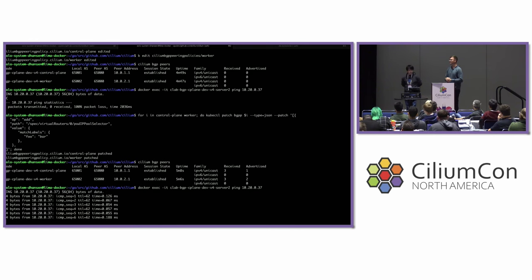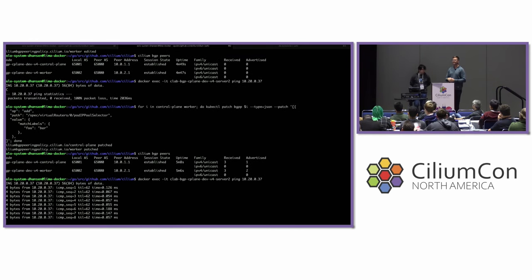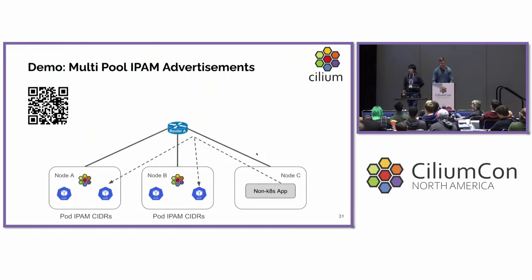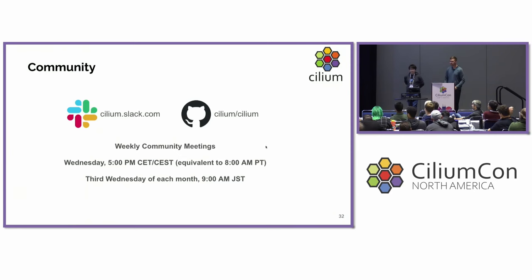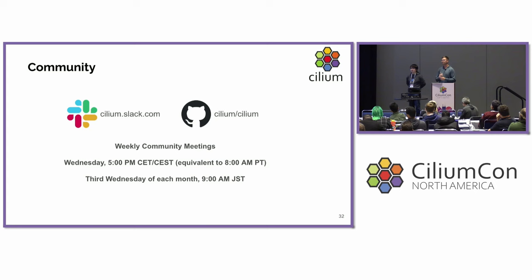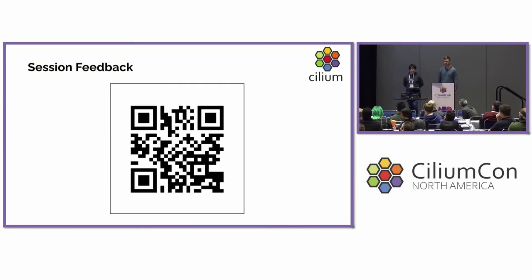Pretty simple demo. We didn't have a lot of time to get into all the different details of BGP control plane, so please take some time to check out the documentation. If you'd like to get involved, we'd love more involvement — not only in BGP control plane, but Cilium has a lot of great functionality and we're always looking for more help, whether it be submitting code, fixing issues, or documentation. It's a great community to work in. Please use the QR code to provide feedback.